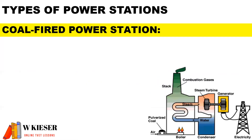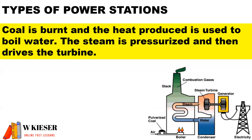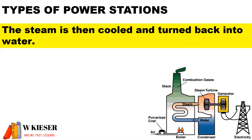We get different types of power stations in South Africa. For coal-fired power stations, in terms of the operation, coal is burnt and the heat produced is used to boil water. The steam is pressurized and then drives the turbine. The steam is then cooled and turned back into water.